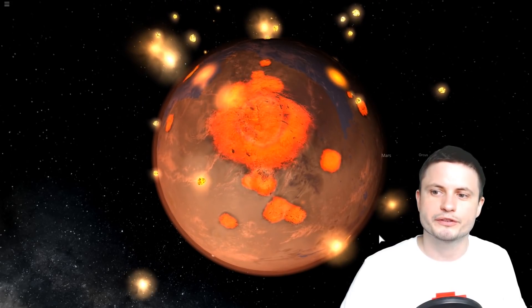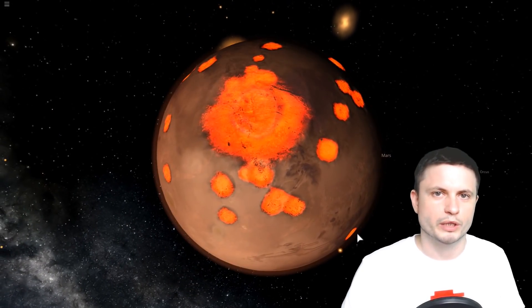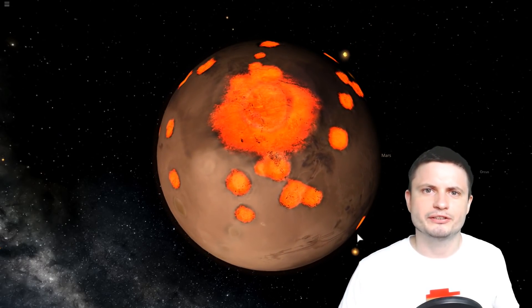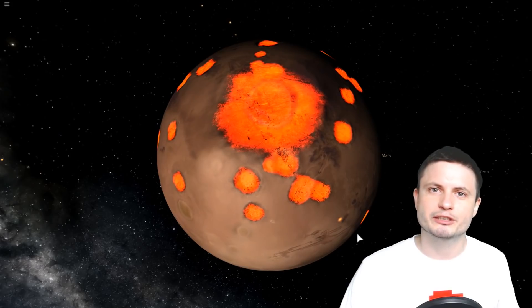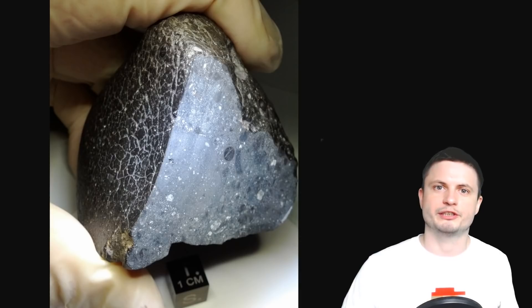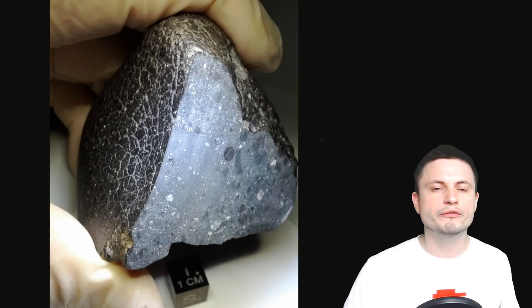How do we know this and why is it that scientists now believe that it didn't really experience this and may have had liquid water? Even though we don't have actual Martian rocks that we brought from Mars, we do have a lot of Martian meteorites that made it here to Earth from various collisions that Mars experienced previously.